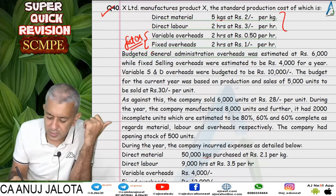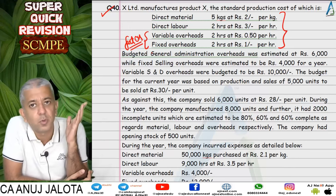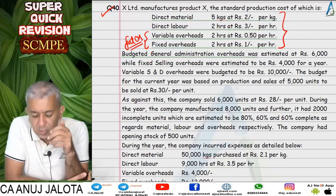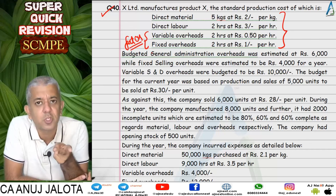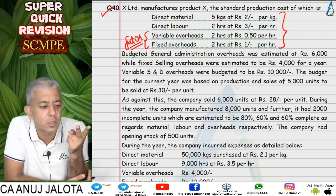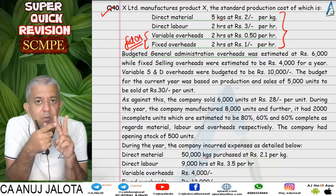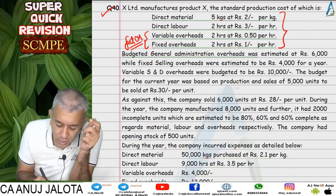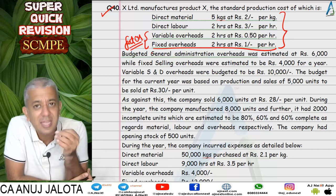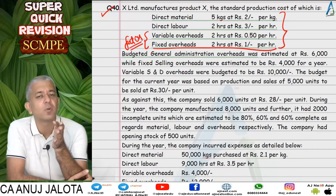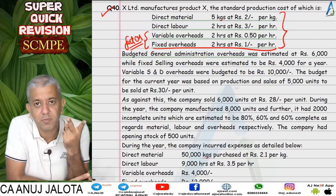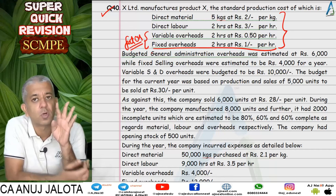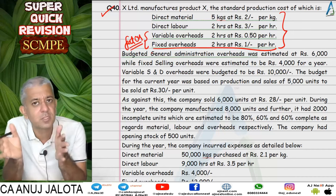We had started doing our charts earlier. There were two parts to the charts. First, we need to value our stock: WIP and finished goods stocks are always valued at standard cost. Standard cost includes direct material, direct labor, variable factory overheads, and for fixed factory overheads we consider whether it is absorption or marginal costing. In this question we followed absorption costing, so fixed overhead was a per-unit cost.